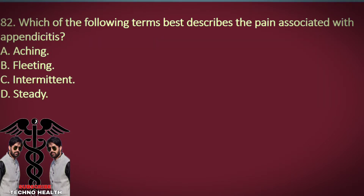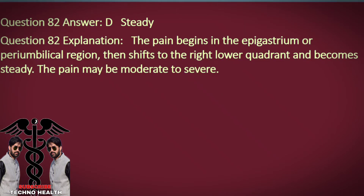Question 82. Which of the following terms best describes the pain associated with appendicitis? A. Aching. B. Fleeting. C. Intermittent. D. Steady. Answer: D. Steady. Explanation: The pain begins in the epigastrium or periumbilical region, then shifts to the right lower quadrant and becomes steady. The pain may be moderate to severe.